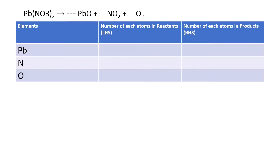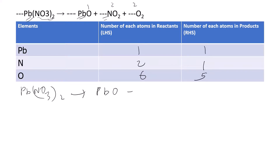Next equation: Pb(NO₃)₂ gives PbO + NO₂ + O₂. Counting atoms: lead has one on each side. Nitrogen has two on the reactant side and one on the product side. Oxygen has three times two, giving six on the reactant side, and one plus two plus two, giving five on the product side. Since lead is already balanced, we move to nitrogen.